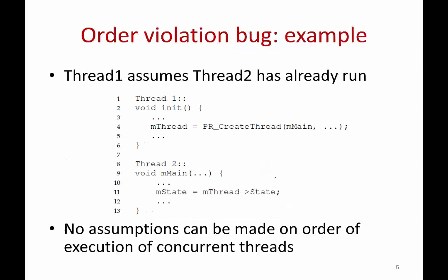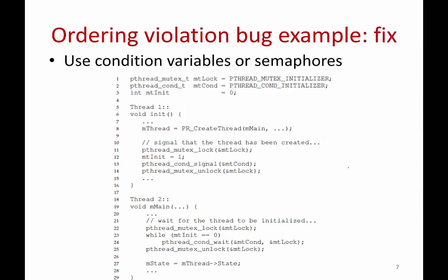An order violation bug example: thread one initializes a variable and thread two assumes that variable is already initialized. But thread two might run first due to the OS scheduler. The solution is to use a condition variable: thread two checks whether initialization is done and waits if it isn't; once thread one completes initialization, it signals the condition variable so thread two can proceed. Use condition variables or semaphores to ensure correct ordering of thread execution.